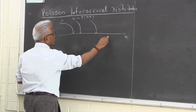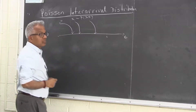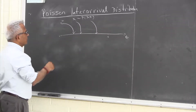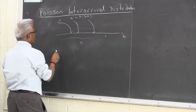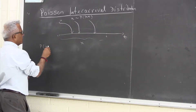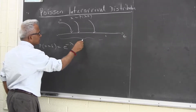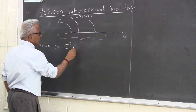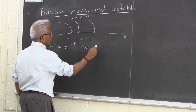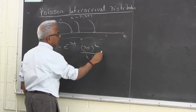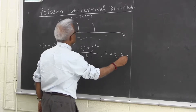If you take an interval 0 to t, the number of arrivals is going to be a random variable. If I denote this random variable by x, the probability of x equal to k is e raised to minus lambda t, times lambda t to the power k over k factorial, where k can be 0, 1, 2, 3, etc.